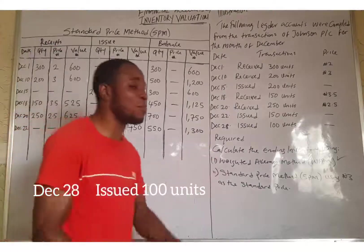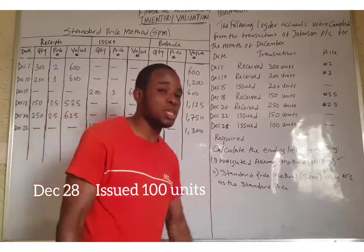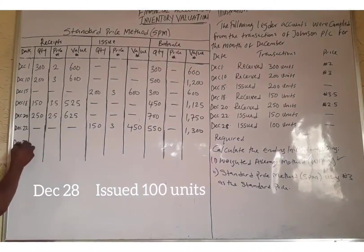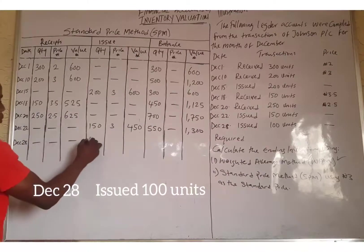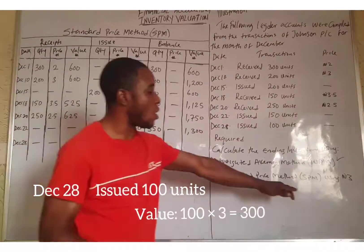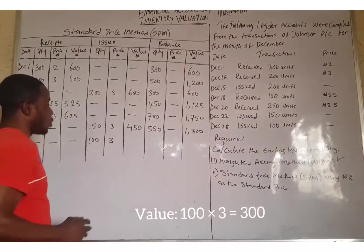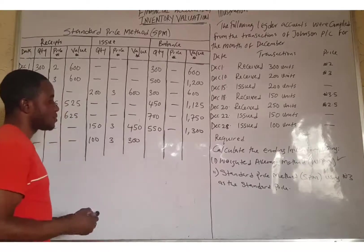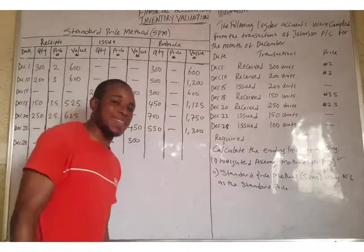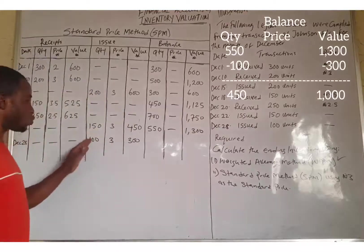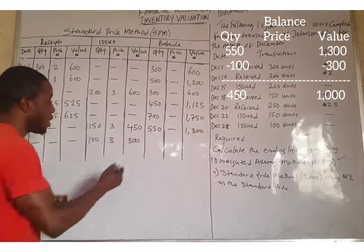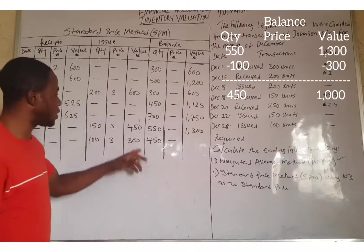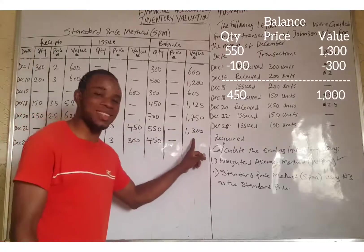The last transaction is December 28. They issued 100 units. With the standard price of ₦3, 100 multiplied by ₦3 equals ₦300. The balance reduces: 550 minus 100 equals 450 units, and ₦1,300 minus ₦300 equals ₦1,000.